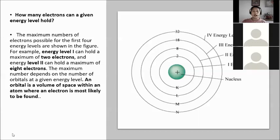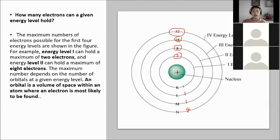The maximum number of electrons for the first four energy levels is shown: energy level 1 (K) holds 2, level 2 (L) holds 8, level 3 (M) holds 18, and level 4 (N) holds 32. The maximum number depends on the number of orbitals at a given energy level. An orbital is a volume of space within an atom where an electron is most likely to be found.